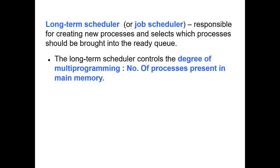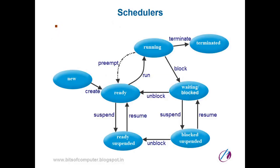The long-term scheduler controls the degree of multiprogramming, that is the number of processes present in main memory. Processes are brought from new state to ready state by the long-term scheduler. The long-term scheduler also has authority over how many processes should be brought into the ready queue. If there are more processes waiting in the ready queue, it reduces the speed of bringing new processes in; if there are fewer processes, it can increase that speed. How many processes should be in the ready queue in main memory is decided by the long-term scheduler.